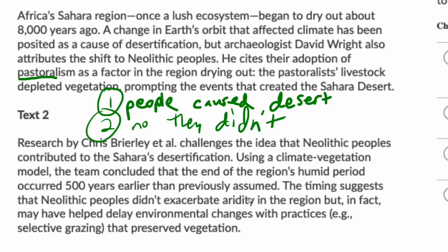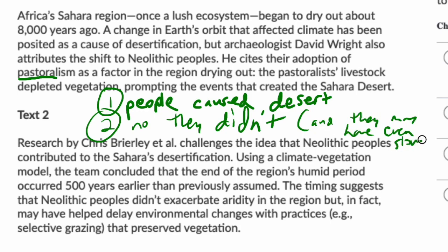In fact, the neolithic peoples may have actually helped delay environmental changes with practices that preserve vegetation. So not only did they not cause it — they may have even slowed the process.